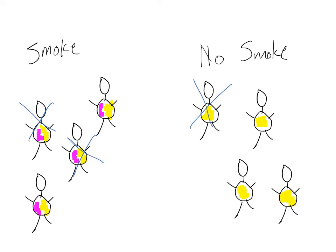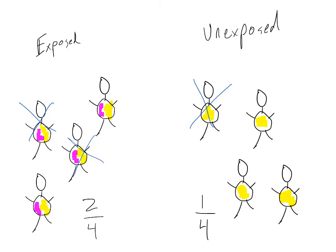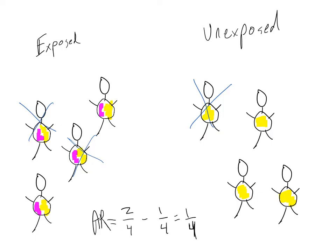Now, say two of our smokers develop cardiovascular disease and one of our non-smokers develops cardiovascular disease. Our incidence in smokers is 2 out of 4 and our incidence in non-smokers is 1 out of 4. When we calculate our attributable risk, we take the incidence of cardiovascular disease among smokers and remove the risk attributable to factors other than smoking, which we estimate as the incidence of cardiovascular disease in our non-smokers. What's left over is the incidence that is attributable to smoking alone.